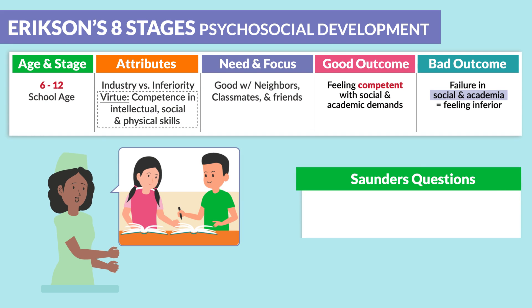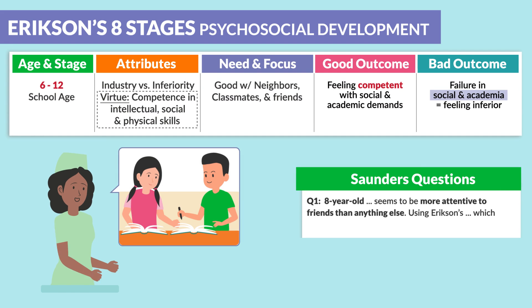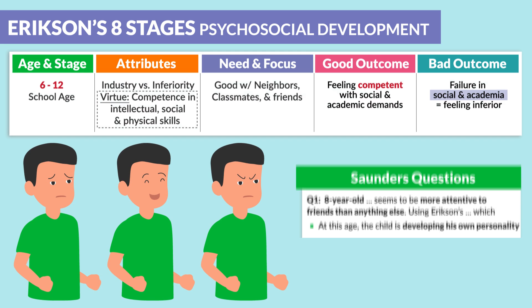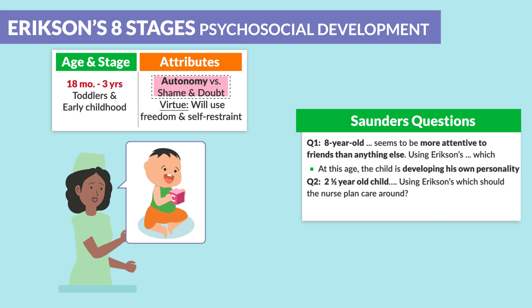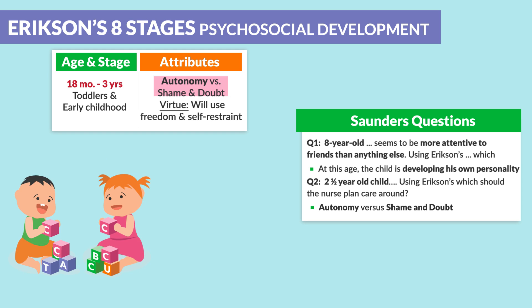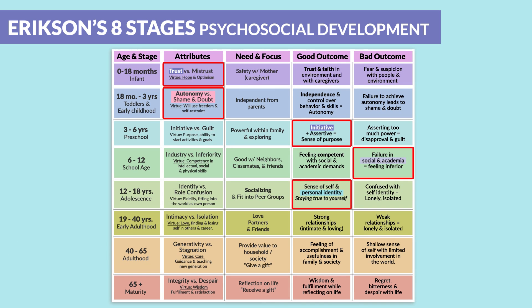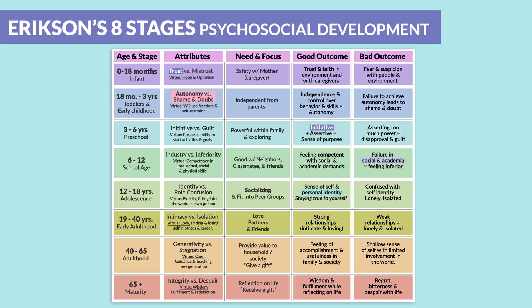Saunders mentions two questions. First: an eight-year-old seems to be more attentive to friends than anything else — using Erikson's, which response? At this age, the child is developing his own personality. Second: a two-and-a-half-year-old child using Erikson's — which should the nurse plan care around? Autonomy versus shame and doubt. To wrap this up, the majority of test questions come between infancy and adolescence, so focus on these age groups for your next exam.